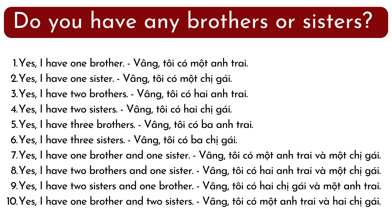Do you have any brothers or sisters? Yes, I have one brother. Yes, I have one sister. Yes, I have two brothers. Yes, I have two sisters. Yes, I have three brothers. Yes, I have three sisters. Yes, I have one brother and one sister. Yes, I have two brothers and one sister. Yes, I have two sisters and one brother. Yes, I have one brother and two sisters.